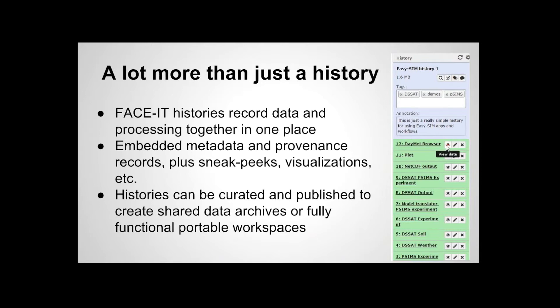The history is really a lot more than just a history. It's a place where you can record data and processing together in one place. It records every single thing you do, and everything you do in FACI is recorded in the history. It includes embedded metadata, provenance, the order that everything is done, sneak peeks, and visualizations. Histories don't just record what you're doing — they can also be curated by the user and published as completely full reusable data archives and basically fully functional portable workspaces. You can import an existing published history and start using advanced functionality immediately. The histories come with all the data they need already embedded, along with all the processes, metadata, and provenance already included.